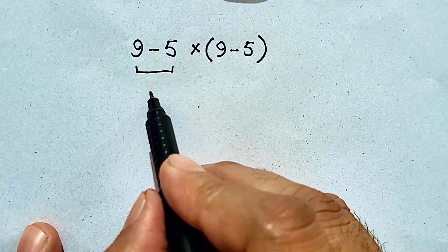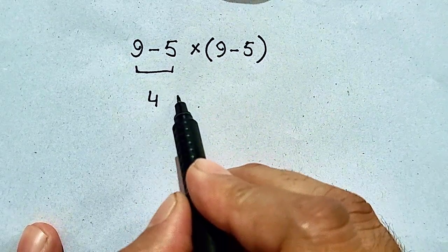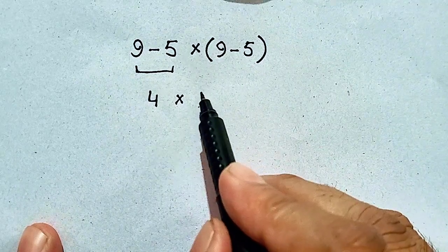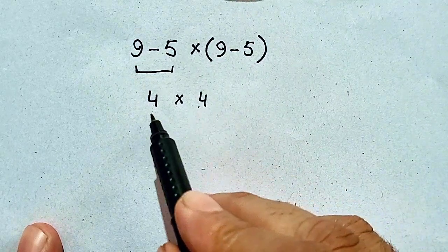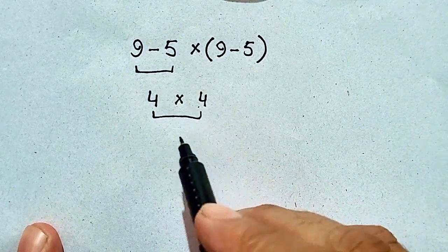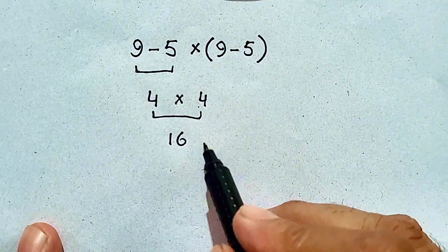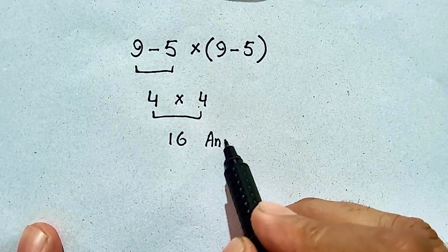9 minus 5 is equal to 4. Now 4 times 4 will be equal to 16, which will be our answer.